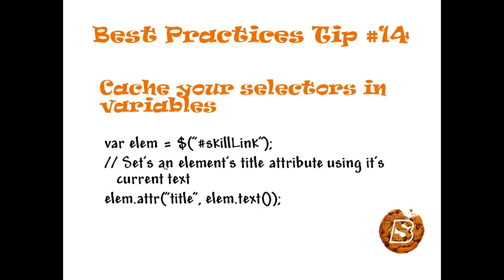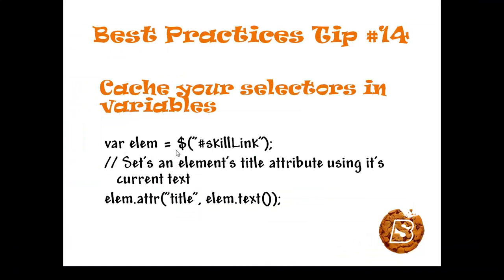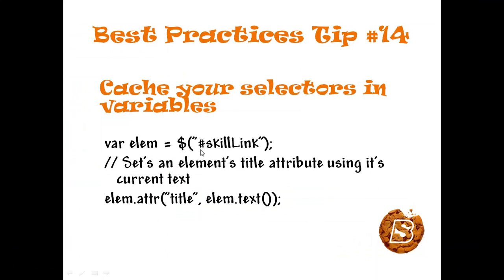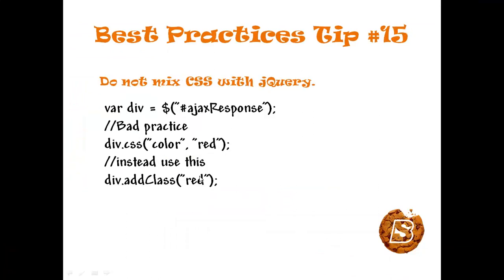Tip number fourteen: whenever we have an element like an anchor tag with ID 'skillLink', to access it we use: element = $('#skillLink'). This caches our selector in the variable 'element'. We can then use this variable to manipulate the DOM — for example, changing the title attribute of this element to whatever its text content is, such as 'Skill Bakery - Start Learning Today'.